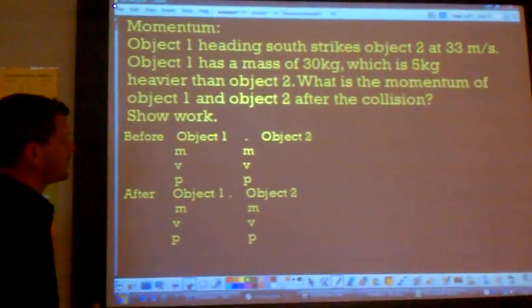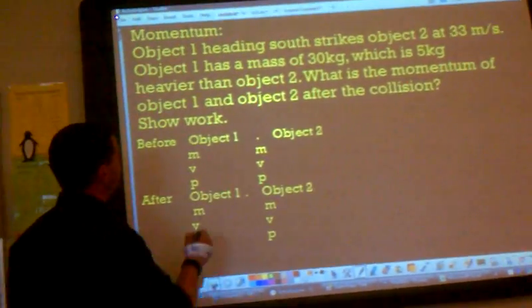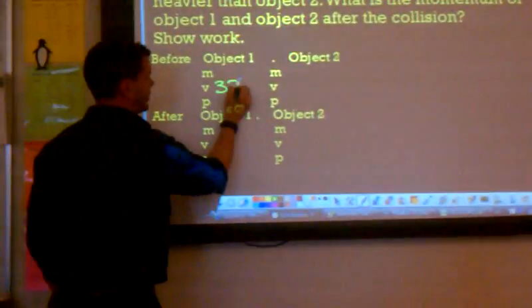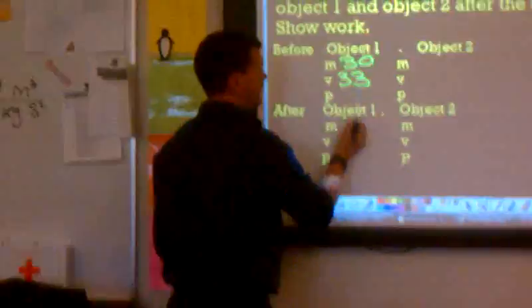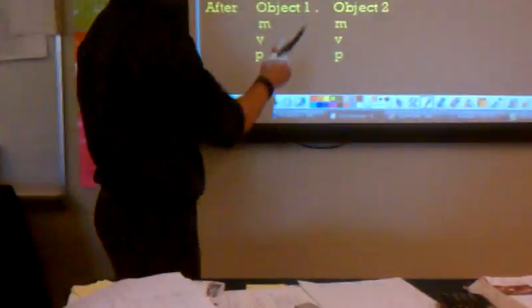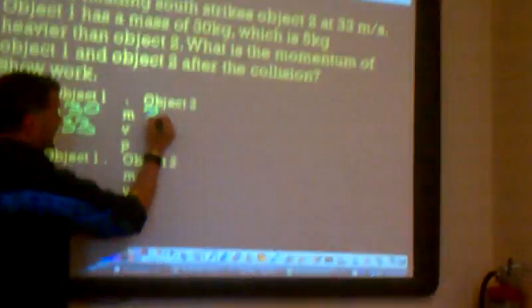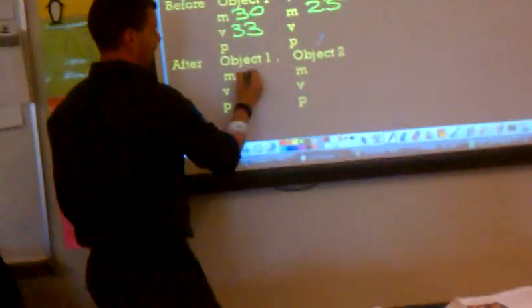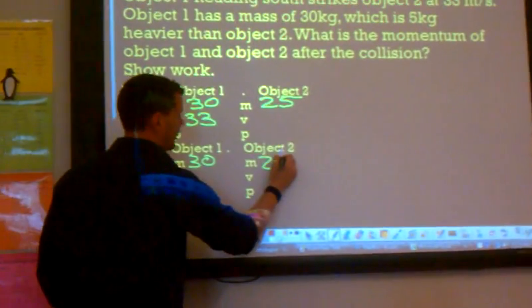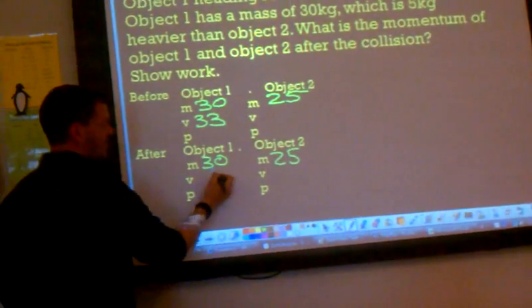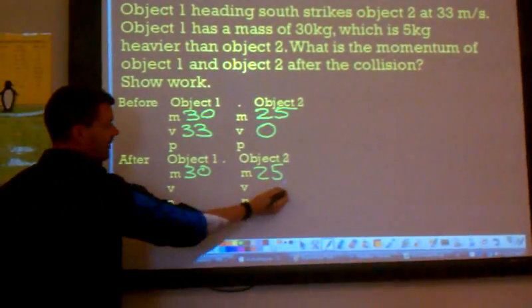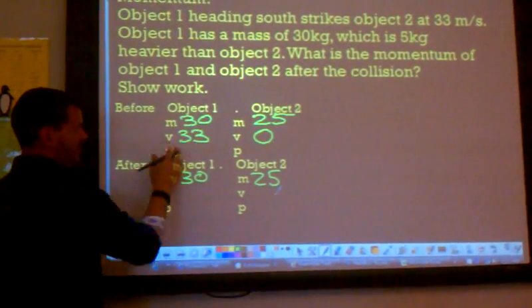So object one, heading south, strikes object two at 33 meters per second. So object one's velocity is 33 meters per second. It has a mass of 30 kilograms. Object two is 5 kilograms less, so it is 25 kilograms. The masses won't change, so we can fill those out. The velocity afterwards. The velocity original for object two is zero. Velocity afterwards, it will have a velocity because it will take object one's momentum.